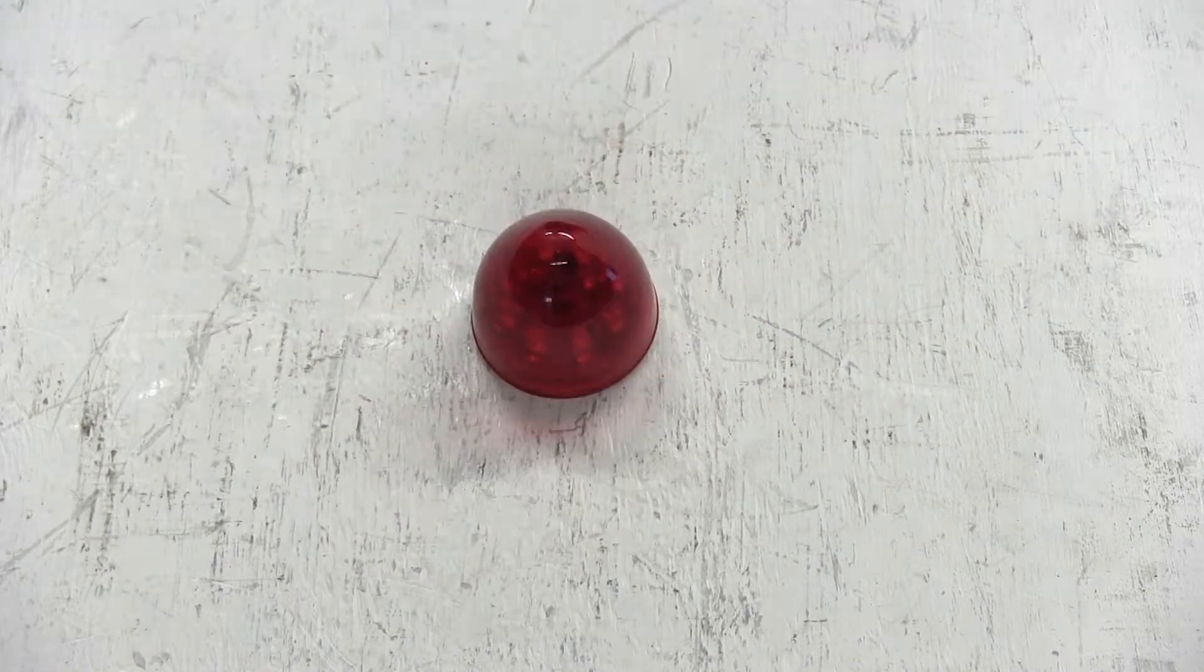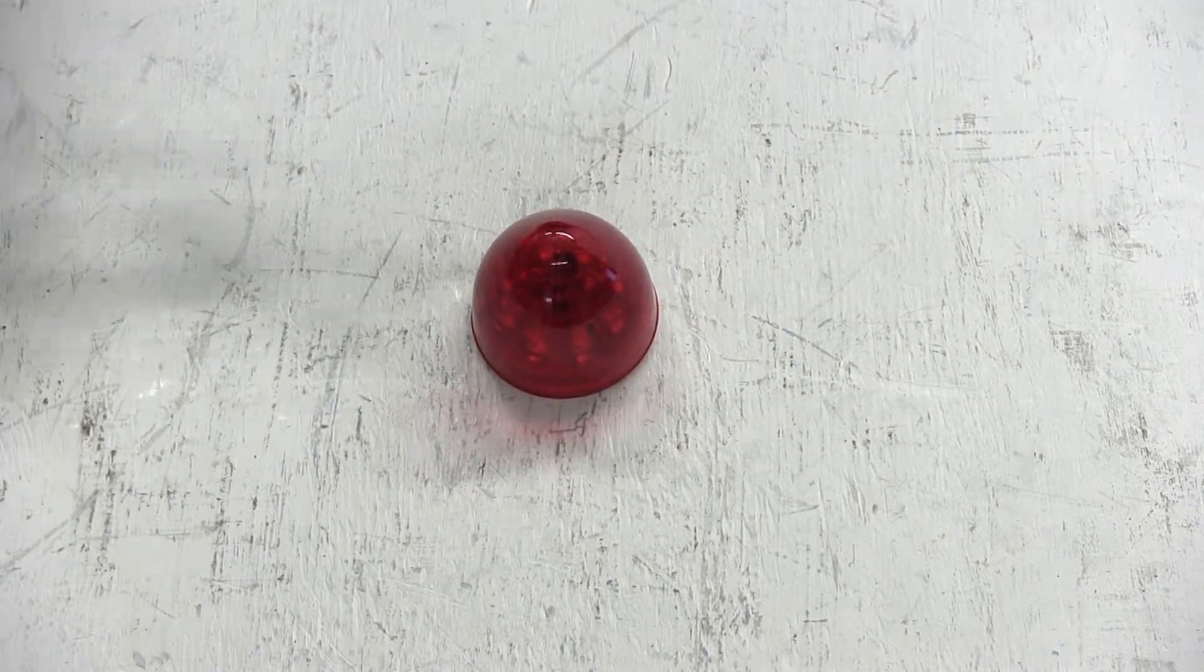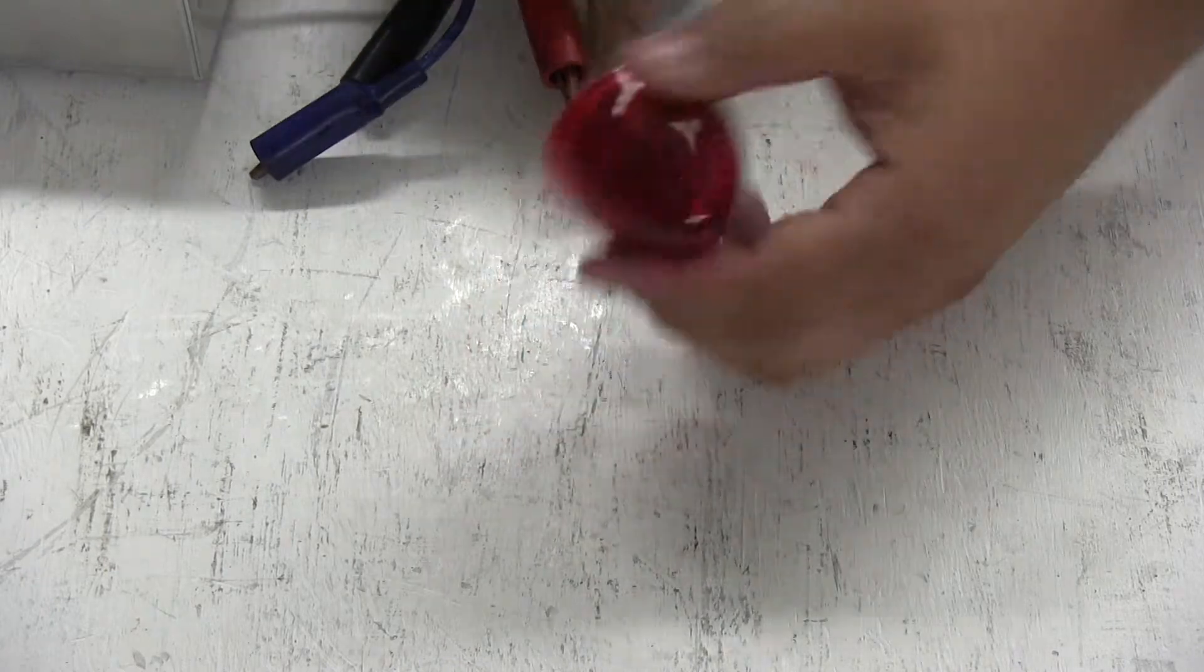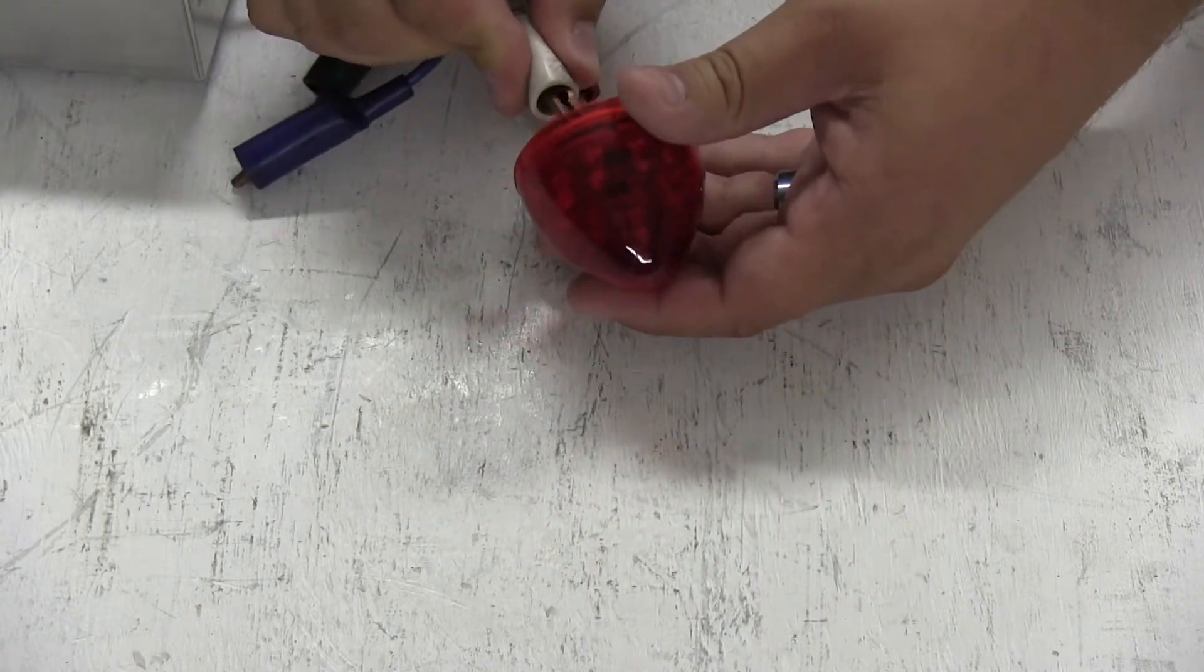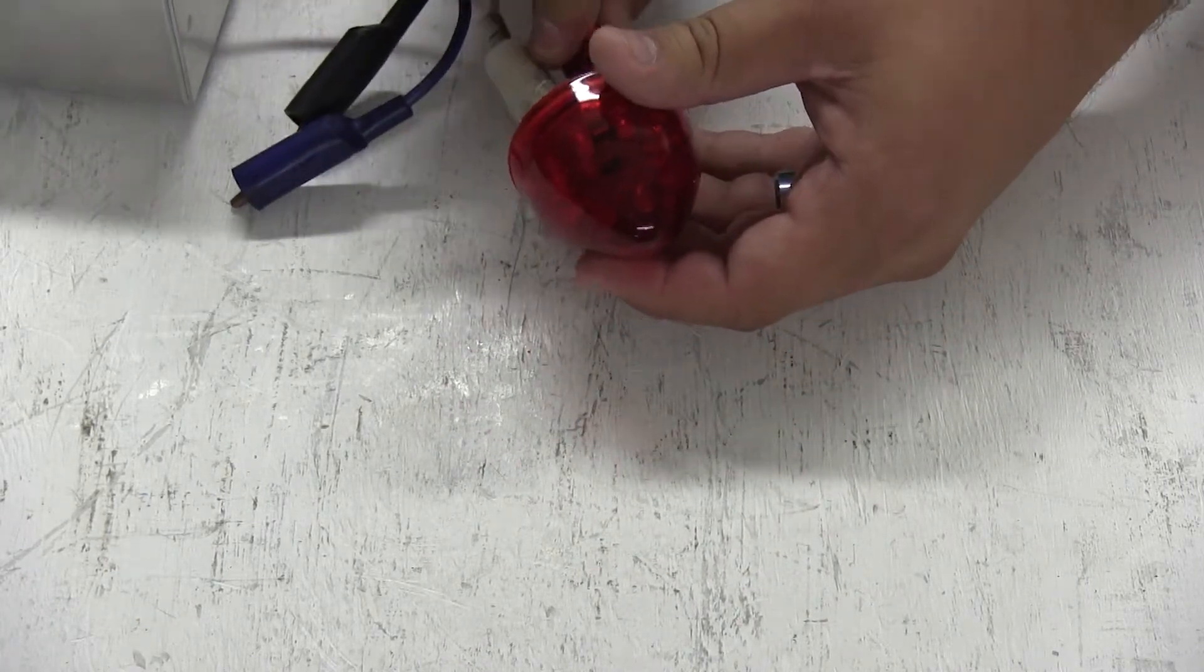Next we're going to hook the light up to a power supply so you can see how it looks. We'll connect one of the contacts to our ground and the other to our power.